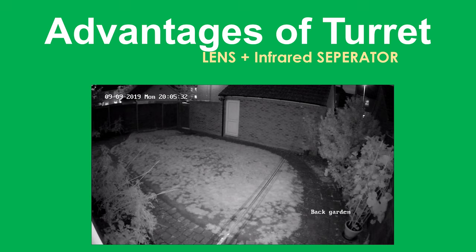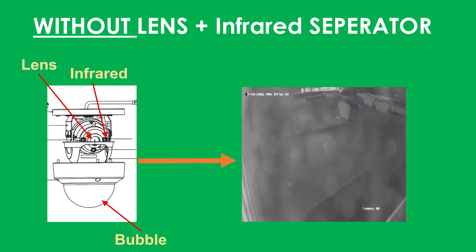This isn't the case with all cameras. For example, with a vandal dome the lens and infrared sit within a mechanism and are closed off by a polycarbonate cover. The problem that can exist here is when rain, sleet, or slow snow settles on the polycarbonate cover and dries up — it creates microparticles. The infrared can end up reflecting back off that, giving you a horrible night image. We'll go into this in a bit more detail later, but keep that in mind.